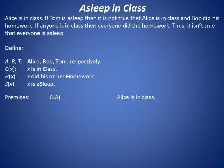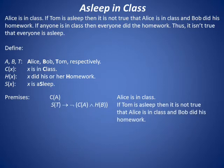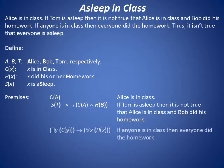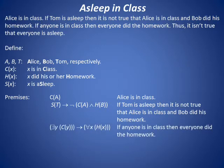From the story and these definitions, we may represent the three premises as: c of a — that is, Alice is in class; s of t implies the negation of c of a and h of b — that is, if Tom is asleep, then it is not true that Alice is in class and Bob did his homework; and there exists a y such that c of y implies for all x, h of x — that is, if anyone is in class, then everyone did the homework.